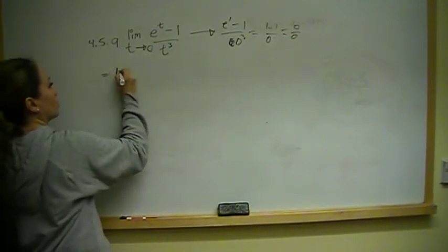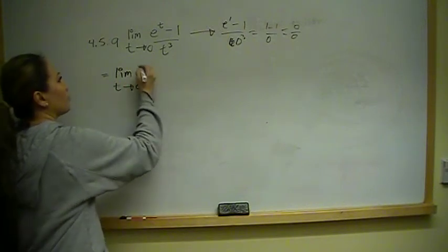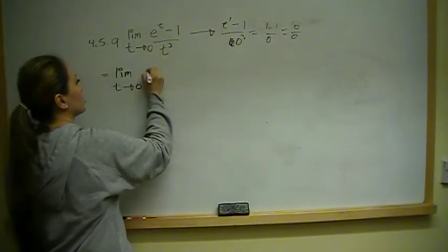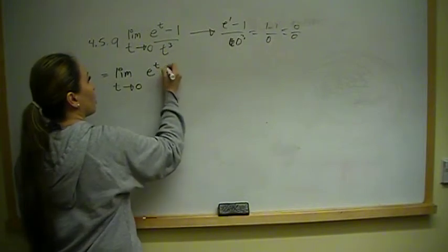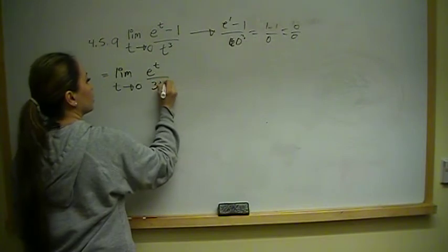So that's equal to the limit as t goes to 0. Derivative of e to the t is just e to the t, and the derivative of 1 is a constant of 0, and that's over 3t squared.